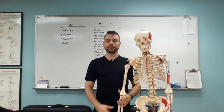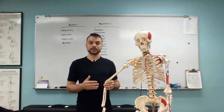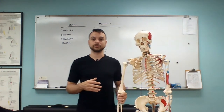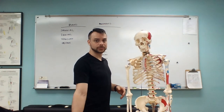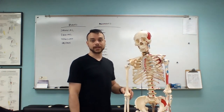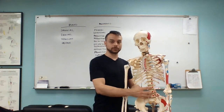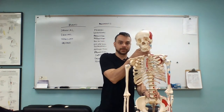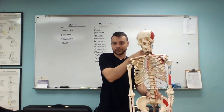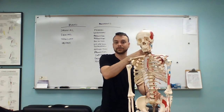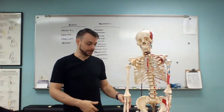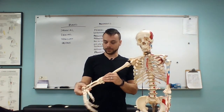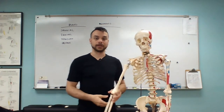These movements are going to be pretty intrinsic and specific to the different joints they occur at. We'll obviously have to talk about each joint and see what that movement looks like specifically. For instance, rotation at the shoulder involves internal/external rotation, but it changes in some areas. Rotating at the intervertebral joints, we can rotate left or right — not internal/external, but the principle is the same: we're pivoting on the spot.